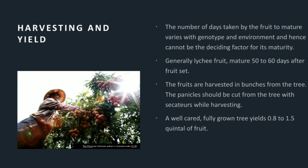Harvesting and yield: The number of days taken by the fruit to mature varies with genotype and environment and hence cannot be a deciding factor for maturity. Generally, lychee fruit matures 50 to 60 days after fruit set. The fruits are harvested in bunches from the tree. The panicles should be cut from the tree with secateurs while harvesting. A well-cared, fully grown tree yields 0.8 to 1.5 quintals of fruit.